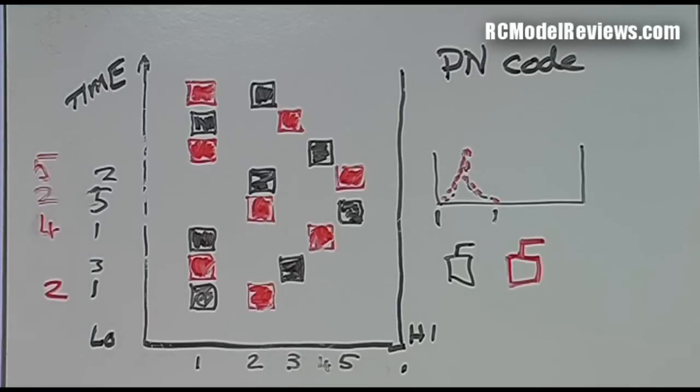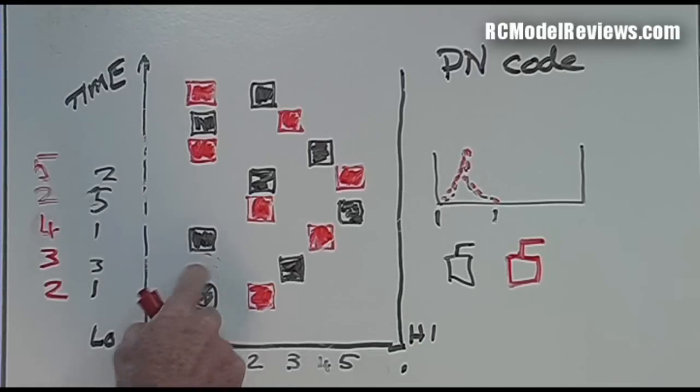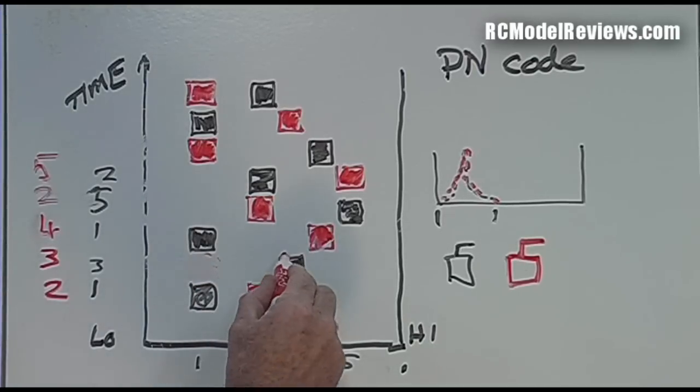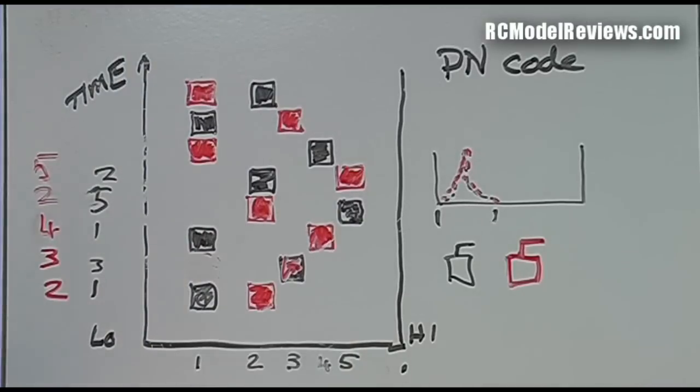That's how we can have two systems appearing to use the same part of the band at the same time without interfering, because the receivers and the transmitters, due to these PN codes, are spreading the signal out and positioning the data at a different part depending on time and depending on the PN code. And so long as the PN codes are different, then they'll never clash.